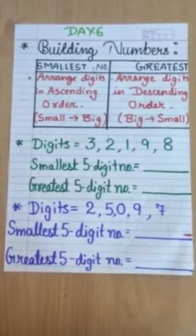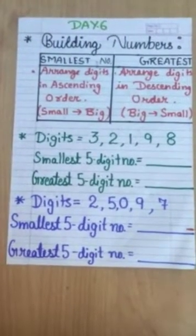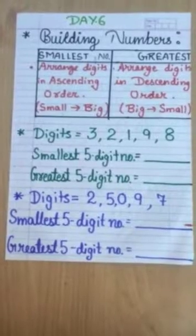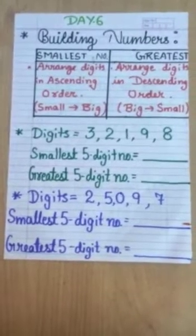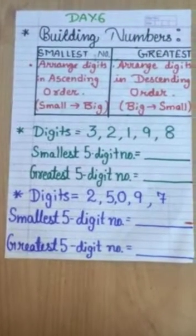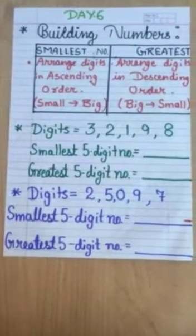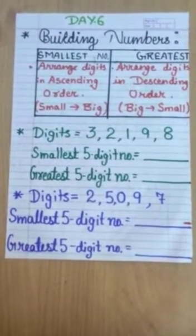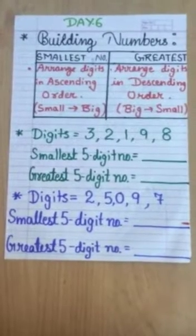Let's take some examples. The first question is given. Digits: 3, 2, 1, 9, 8. Here, 5 digits are given. And we have to build smallest 5 digit number and greatest 5 digit number. Let's build it.